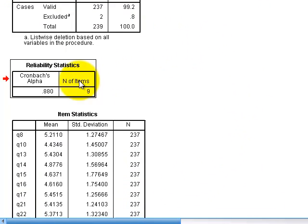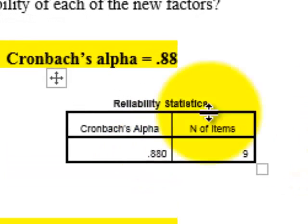So we get this little Cronbach's Alpha box. So here's our results with the reliability. So the first factor, very strong. Cronbach's Alpha is 0.88. Remember, you want a Cronbach's Alpha of at least 0.7 or above.